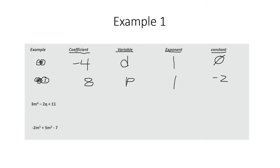Next example: 3m to the power of 4 minus 2q plus 11. There are two variables: m and q. The coefficients — the numbers in front of these variables — are 3 and negative 2. The exponent is 4. The constant is 11, because it is not in front of a variable.